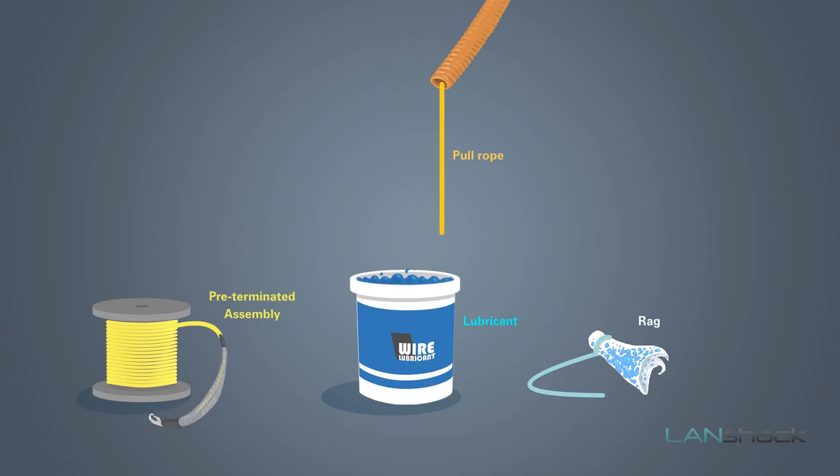To pull the fiber assembly, first create a simple knot on the pull rope and leave a trailer of rope behind the knot. Then attach the metal pull hook to the knot.